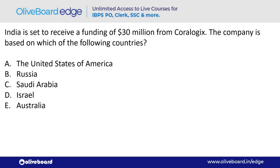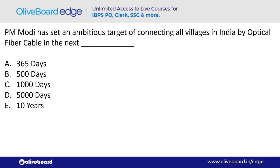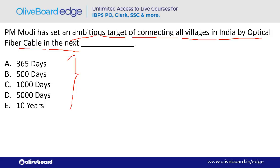CP stands for Commercial Paper — a short-term money market instrument. PM Modi has set an ambitious target of connecting all villages in India by optical fiber cable in the next how many days? The answer is 1,000 days — option C.